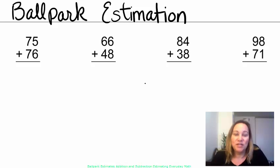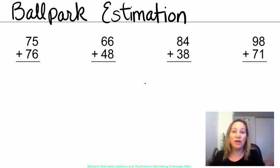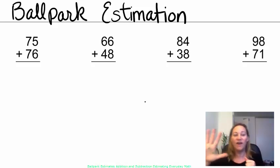Ballpark estimation is something that is supposed to make your life easier because it's going to help you figure out about what your answer is before you actually do the problem. So it's not really supposed to be giving you more work, it's actually a way for you to check your work and make sure that you're doing the problem correctly the first time. The thing to remember more than anything else with ballpark estimation is that the number that you're rounding to, or it's all about rounding, the number that you're rounding to, if it's 5 or more,